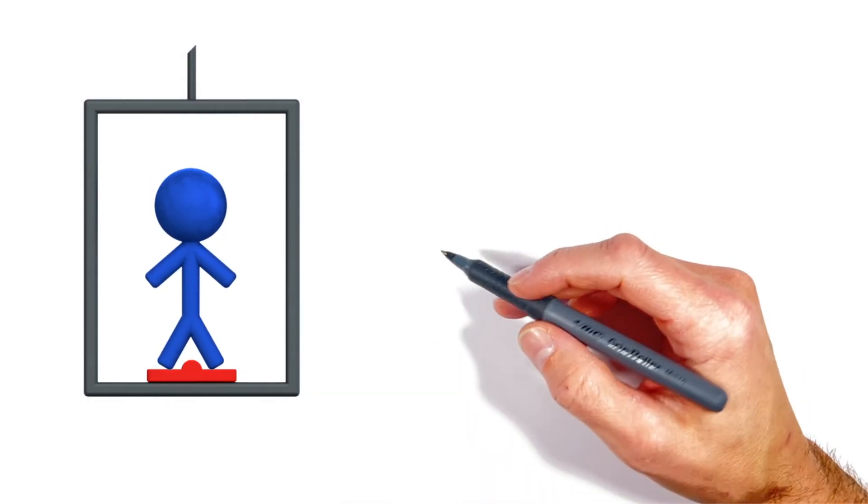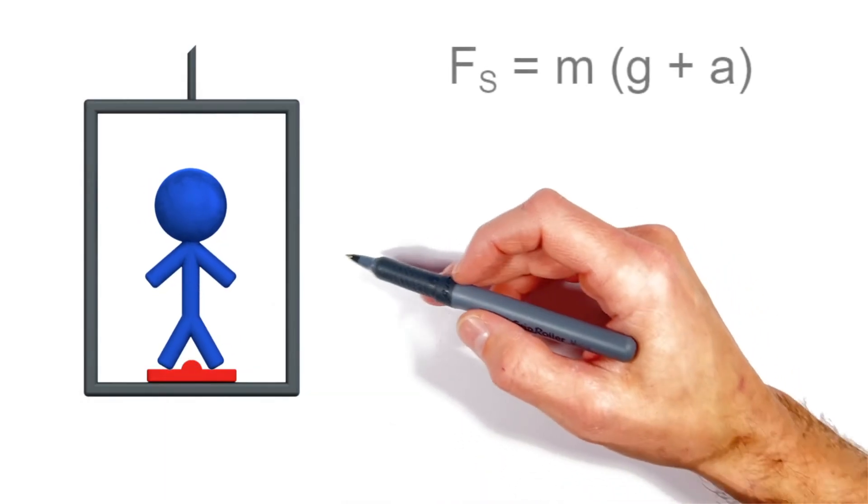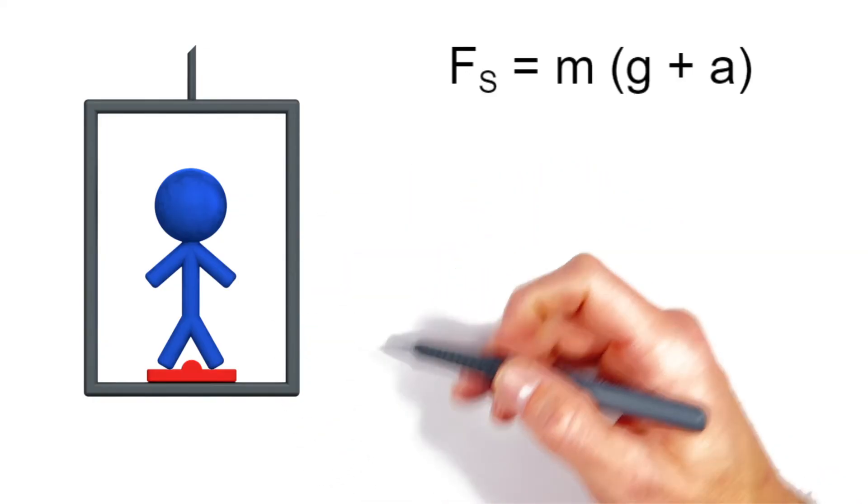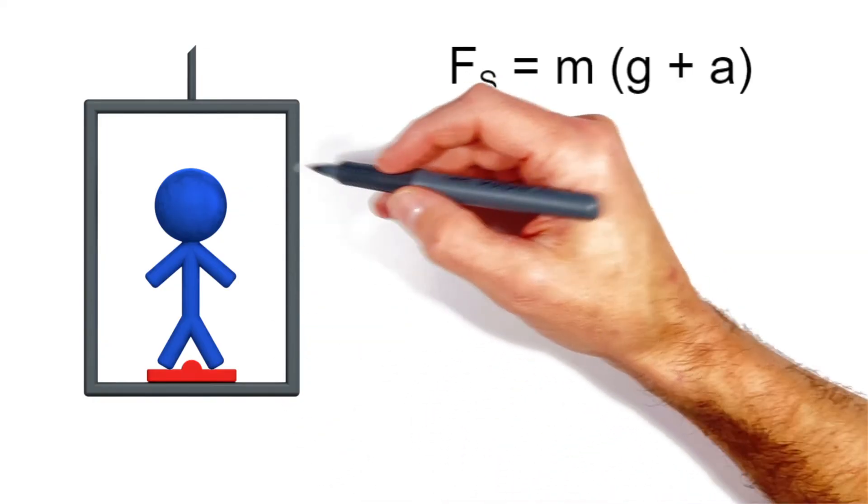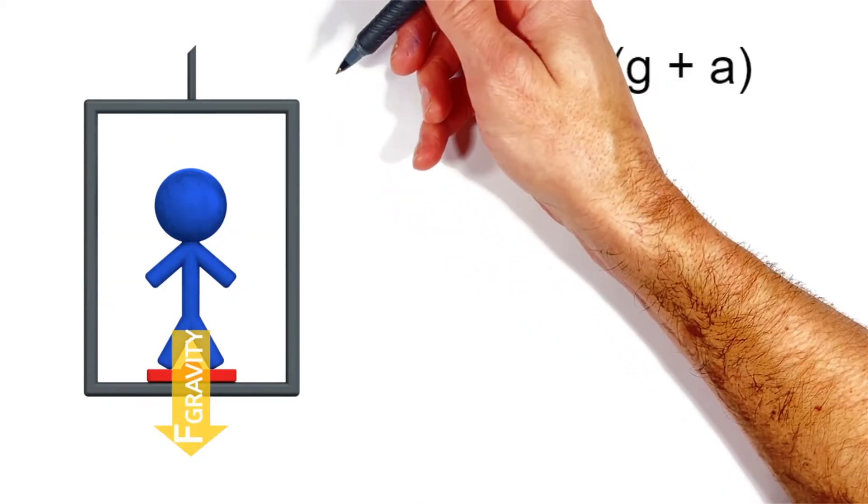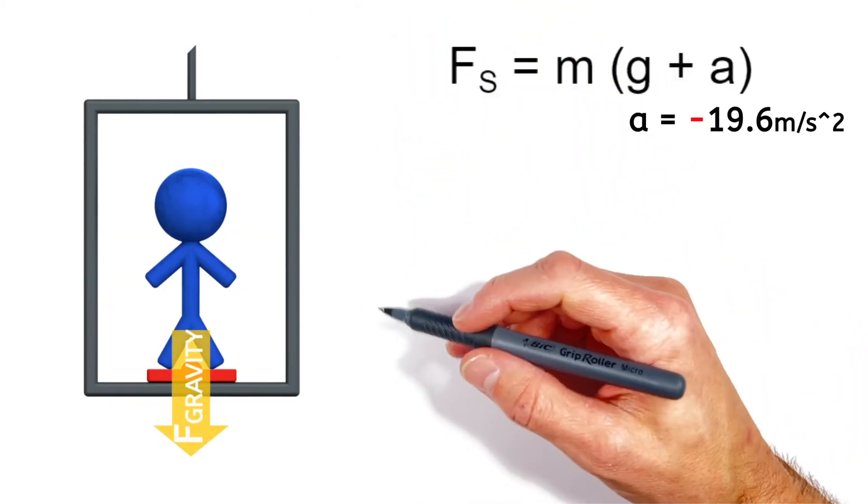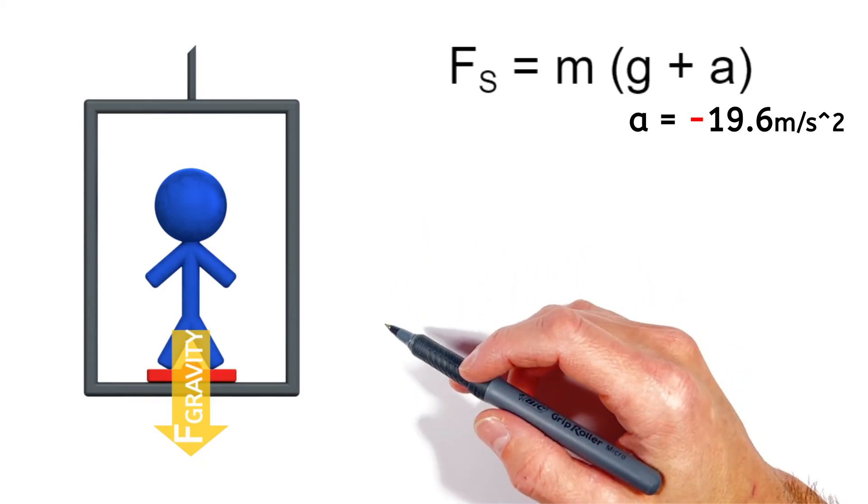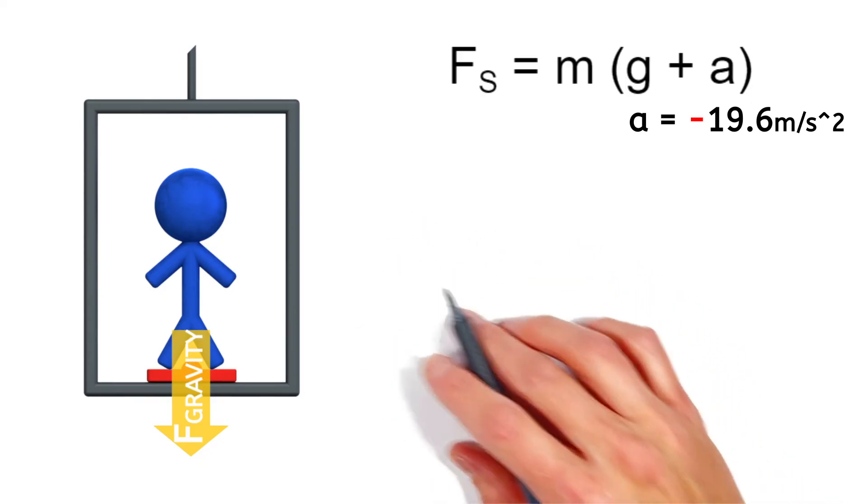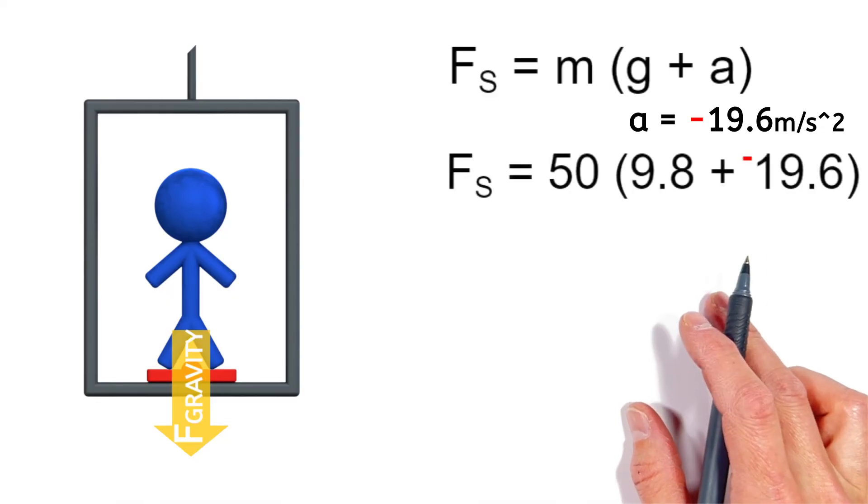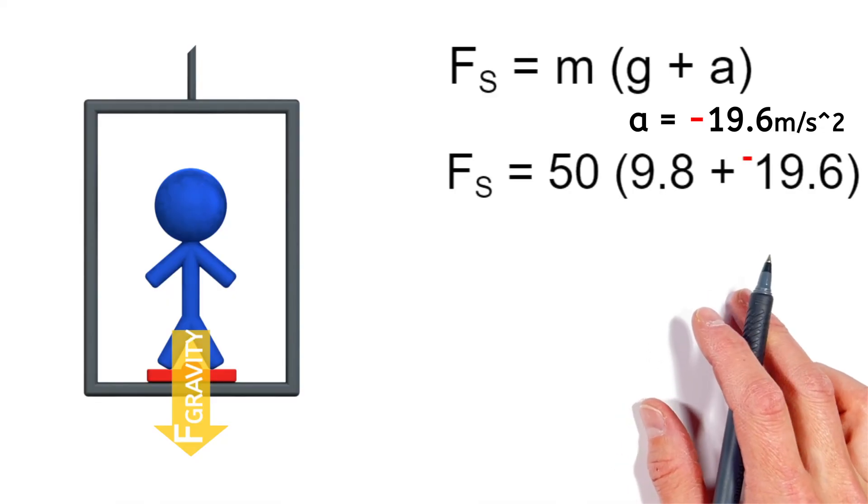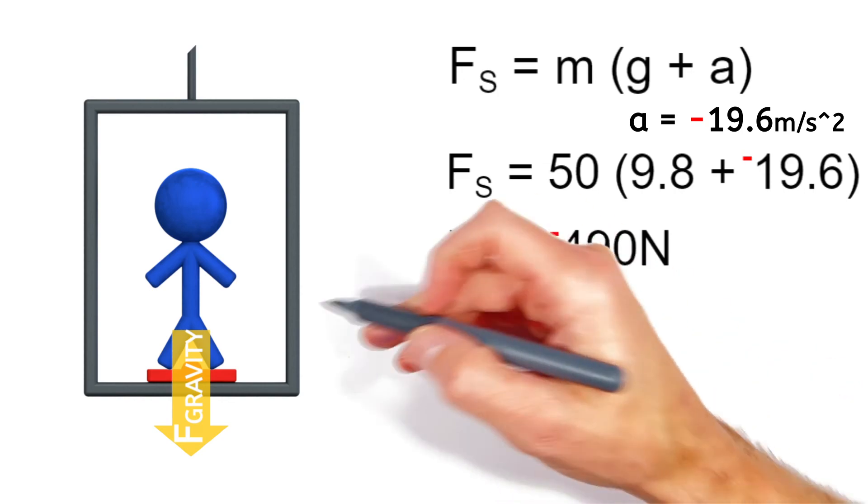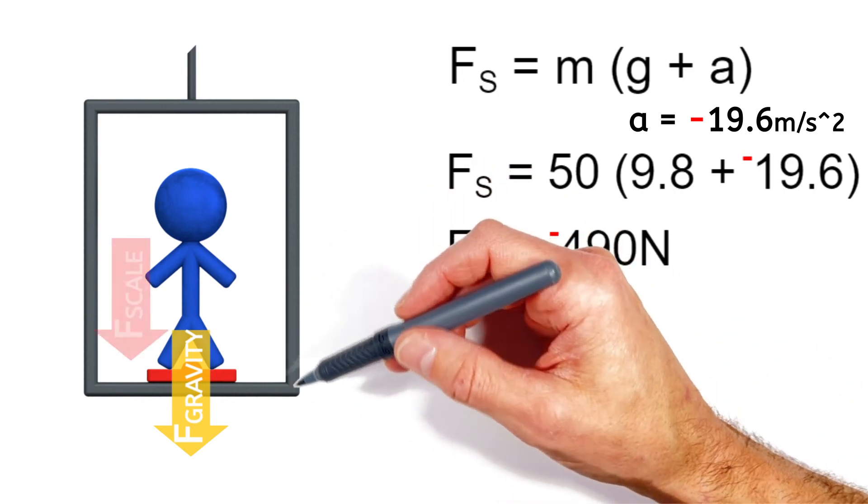Now there's one last example I want to show you that really separates this idea of apparent weight from the true force of gravity. Let's take this elevator and strap a rocket on this and accelerate it downward at 19.6 meters per second squared, or two times the acceleration due to gravity. See, plugging in negative 19.6 for the acceleration, we find the force by the scale is actually negative, meaning the scale would actually have to pull downward on the person.